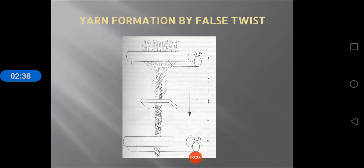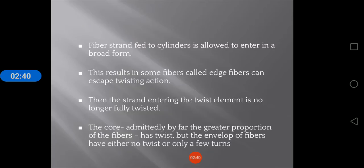Yarn formation by false twist: The fiber strand fed to the cylinders is allowed to enter in a broad form. This results in some fibers called edge fibers that can escape twisting action. Then the strand entering the twist element is no longer fully twisted.